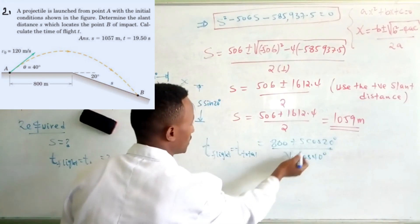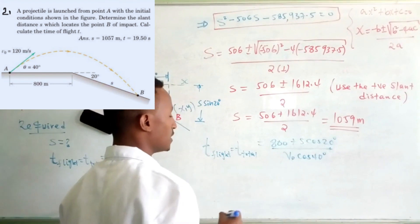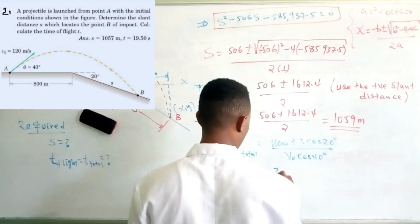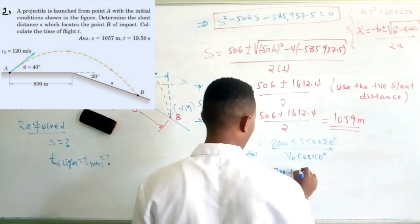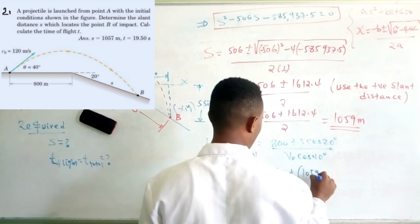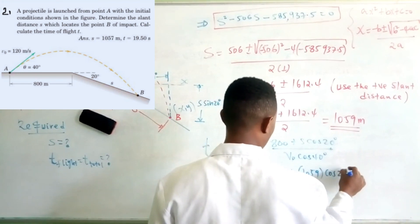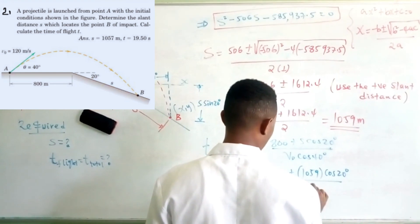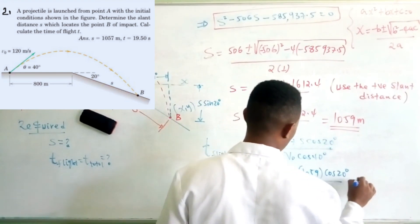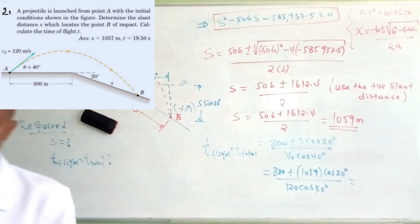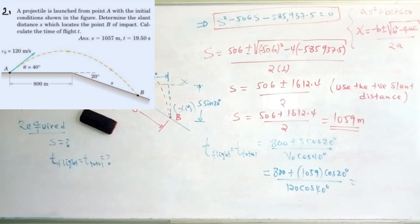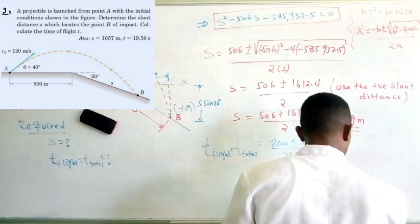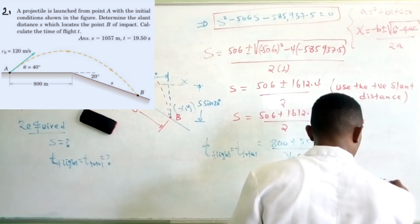Substituting S equals 1059 m and v-naught equals 120 m/s into equation 3, the total time of flight T equals 11.45 seconds.